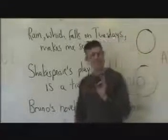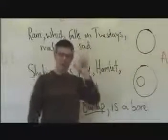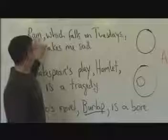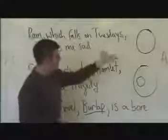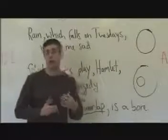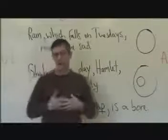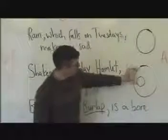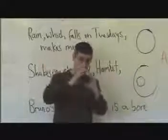One way to approach this is to use a mental Venn diagram of the situation. If we take the set rain — representing all things included in the set rain — what about the set rain which falls on Tuesdays? We know that rain, in fact, falls on each of the seven days given enough time. So rain which falls on Tuesdays is going to be a subset of rain.